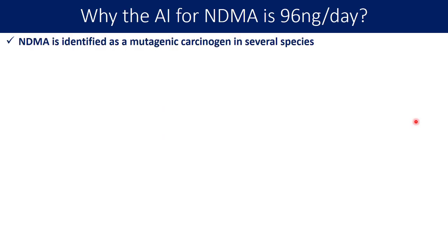NDMA is identified as a mutagenic carcinogen in several species. According to available studies, it is identified as a mutagenic carcinogen, and based on these animal studies, NDMA is also called a possible human carcinogen. If you look at the ICH M7 guideline, you will find that there are certain groups of compounds classified as the cohort of concern, which are highly toxic, having a TD50 value less than 1.5 milligrams per kg per day. Nitrosamines are classified under the cohort of concern, and NDMA is one of them.